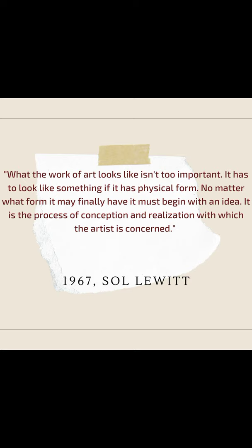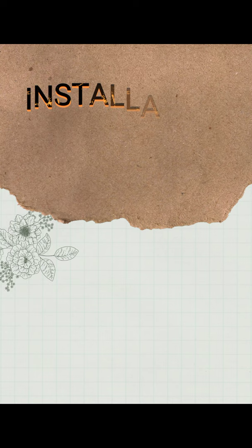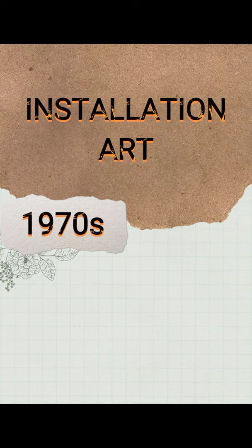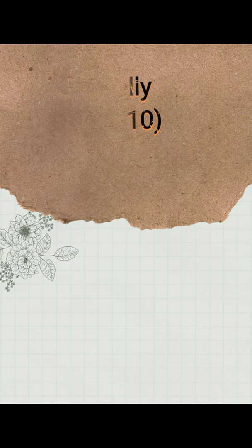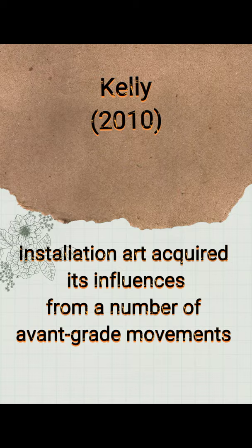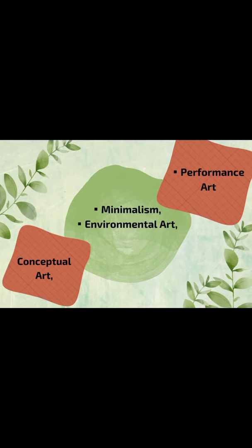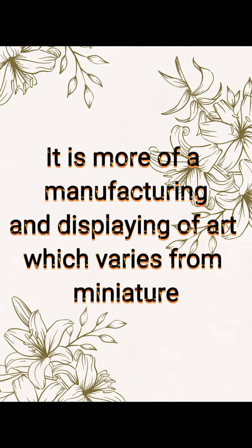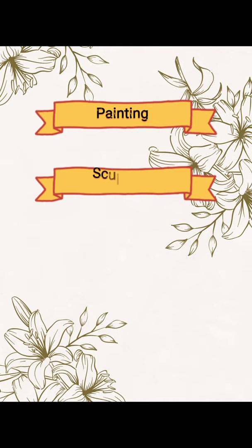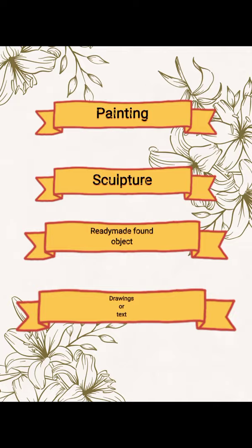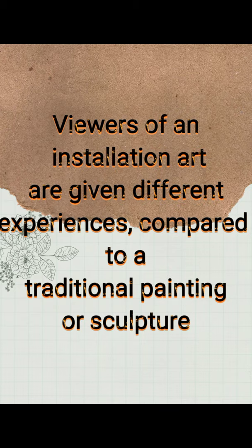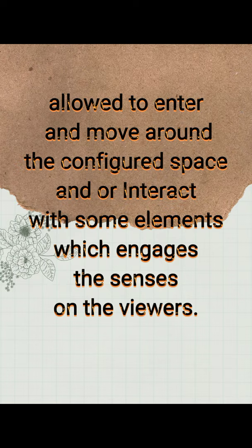Installation art emerged in the 1970s, dominated in the later part by space-involved objects set up and configured in space. According to Kelly in 2010, installation art acquired its influences from a number of avant-garde movements, including Minimalism, Environmental Art, Conceptual Art, and Performance Art. It involves the manufacturing and displaying of art which varies from miniature to huge painting, sculpture, found objects, and drawings or text. Viewers of installation art are given different experiences compared to traditional painting or sculpture, since they are allowed to enter, move around, and interact with elements which engage the senses of the viewers.